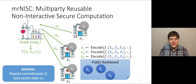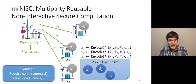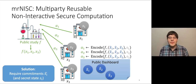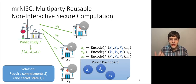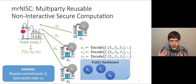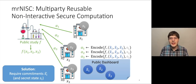Now, if H1 is corrupt and tries to use another database X'1 in its head, it will not be able to compute the output of function F on X'1, X2, X3 using alpha2 and alpha3. Because alpha2 is linked to the commitment X-hat-1, which commits to X1 and not X'1. So alpha2 and alpha3 cannot be used with X'1, and hence the previous attack can be avoided.